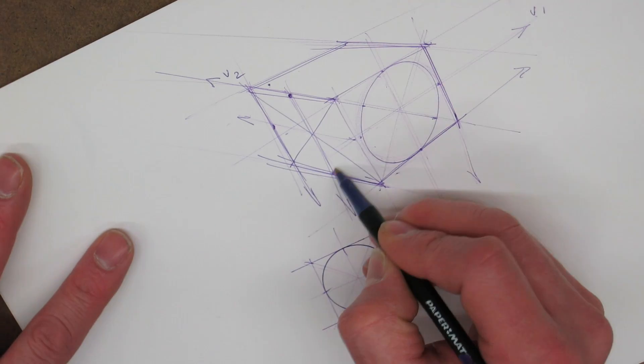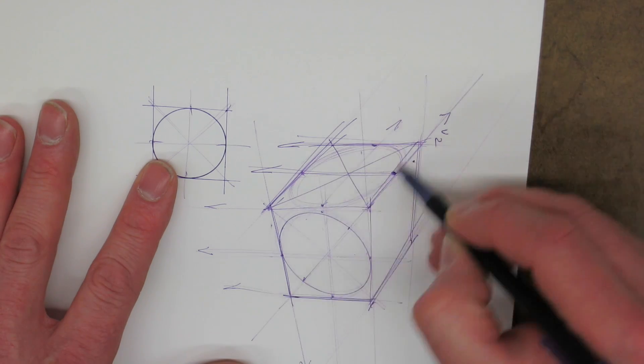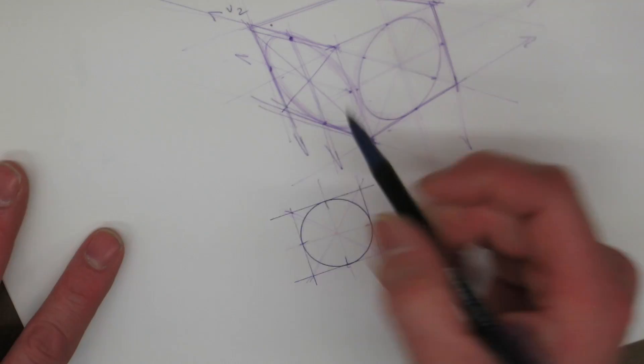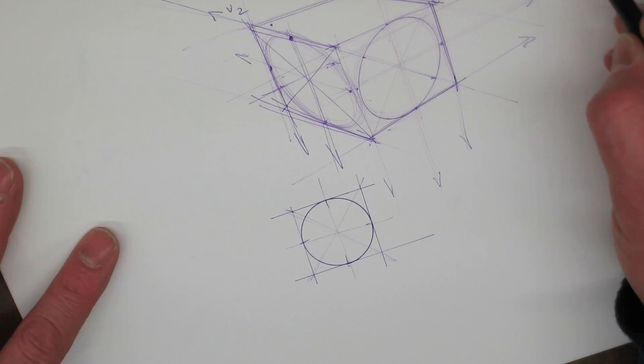but I think it's a little bit too long. I'm putting in my other points and I'm ghosting in the ellipse here just like I did the first one. I'm gonna get an ellipse guide and I'm gonna place it